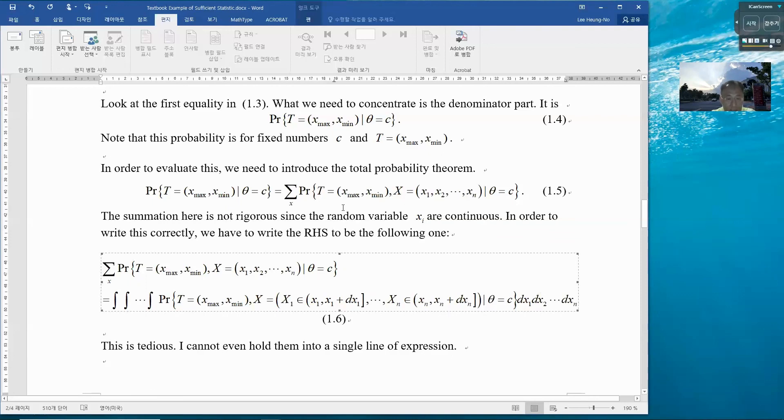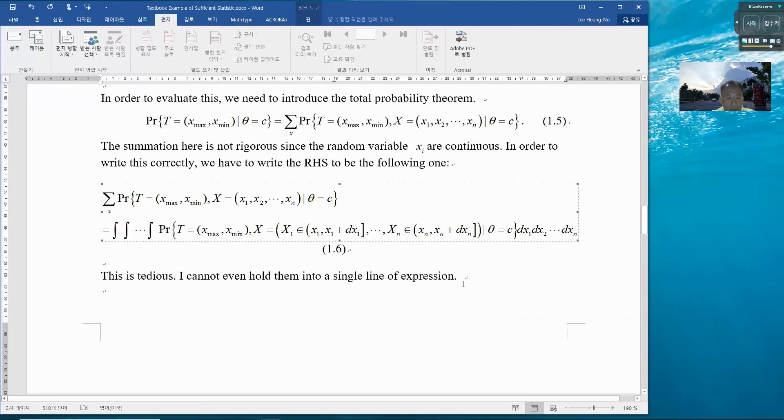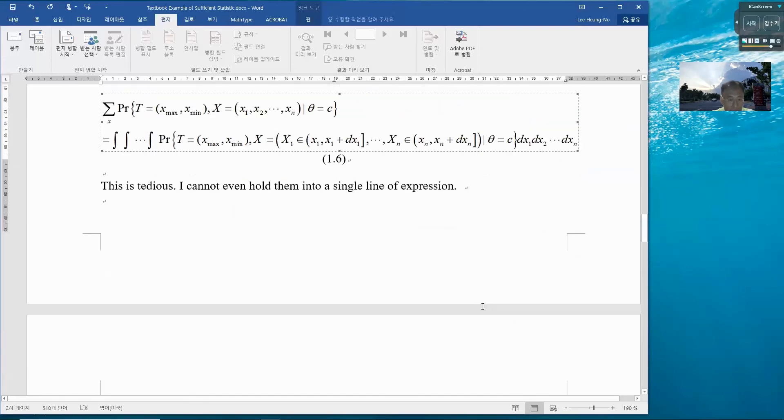But if I treat this as a discrete random variable, I can write very short like this one. So I can focus on the critical part. And then whenever I want to restore it, I can always restore it by remembering what is actually going on with this expression. This is tedious. I cannot even hold them into a single line of expression. If I do that, there are too many variables unnecessarily, so I cannot concentrate on the more important part.